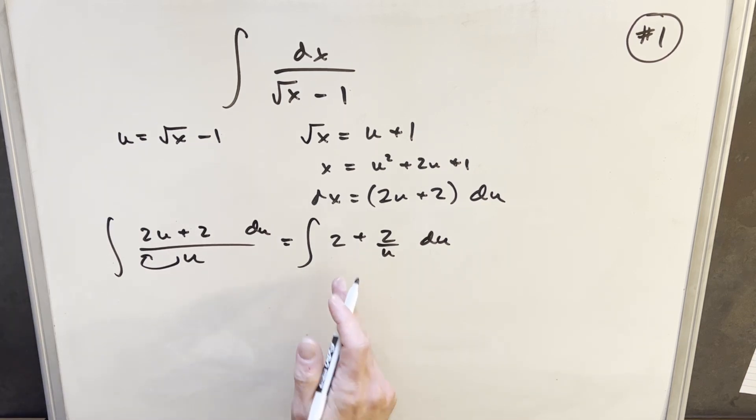This is super easy. We integrate this to get 2u plus 2 natural log absolute value u.